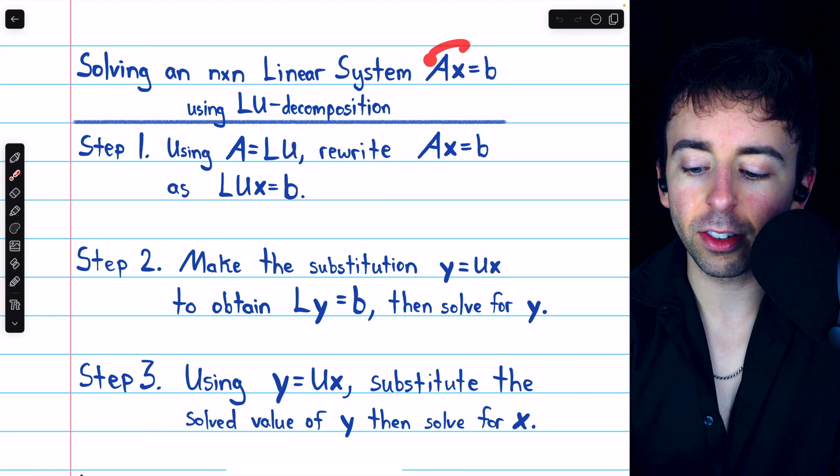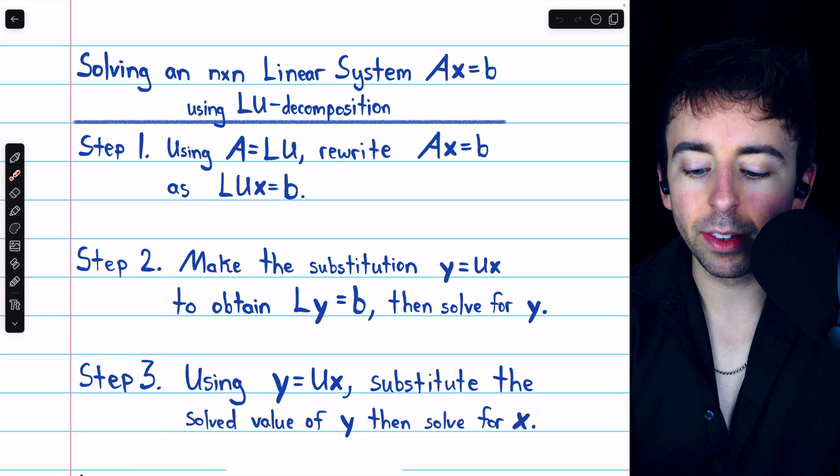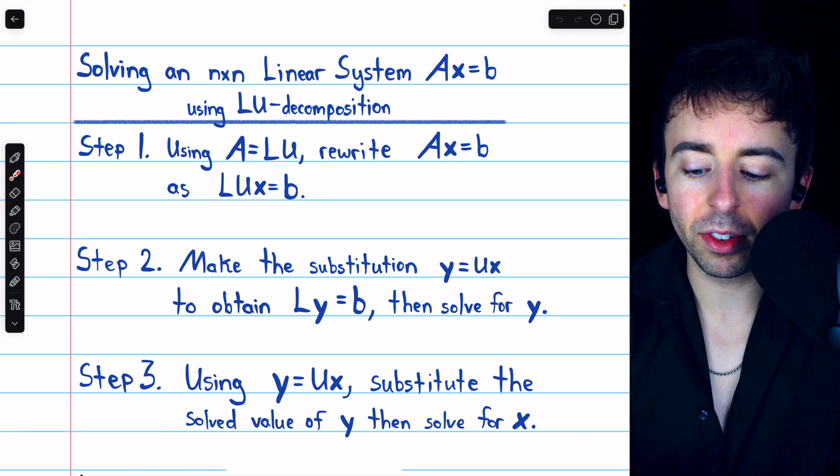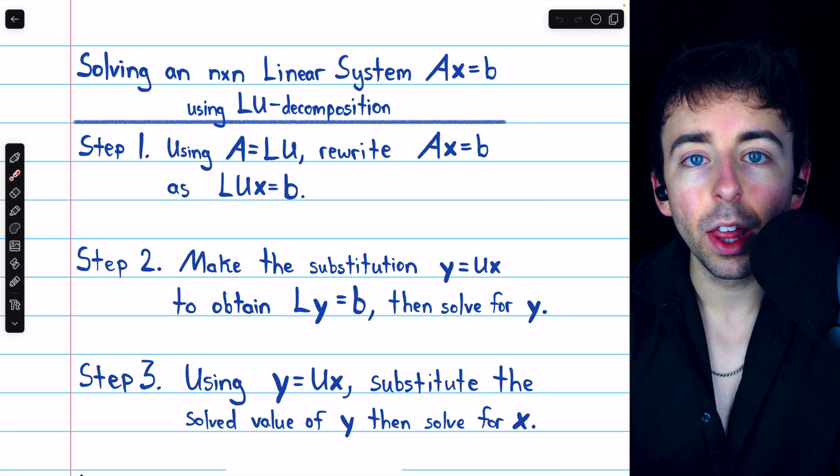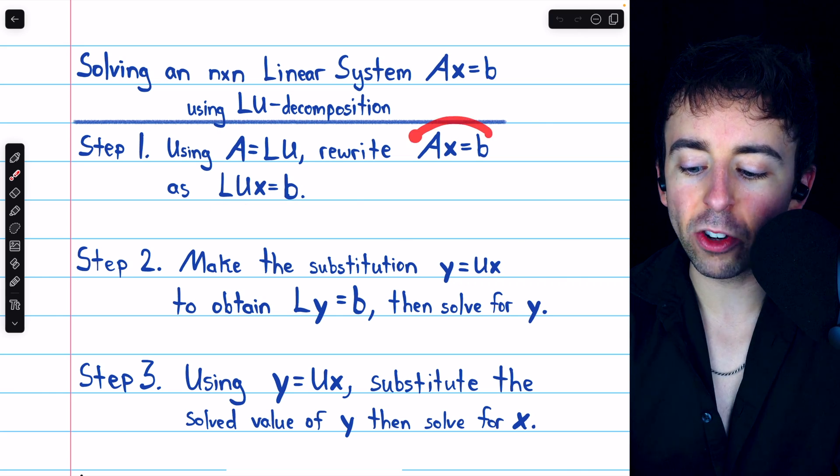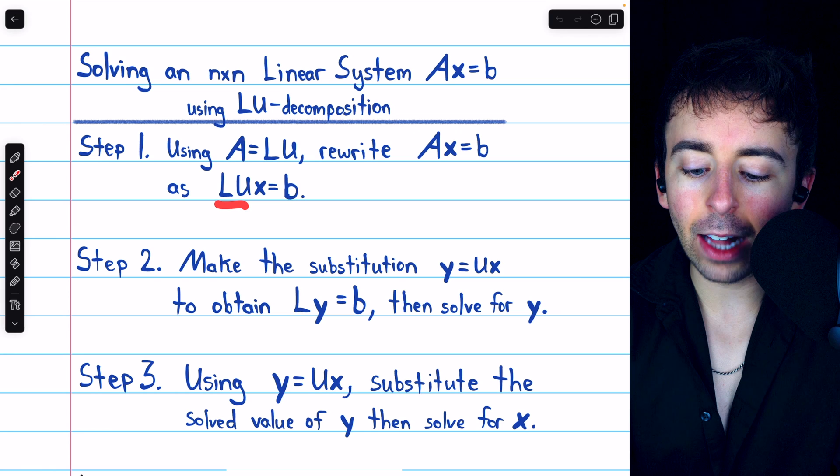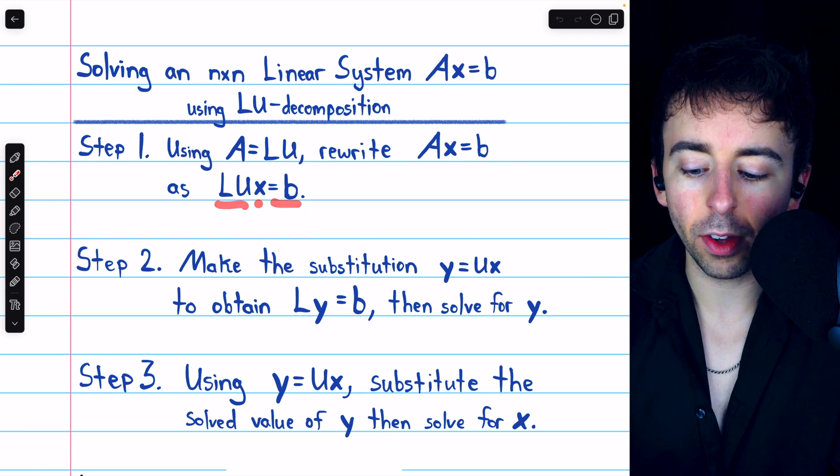To solve a linear system AX equals B, our first step is to use the LU decomposition to rewrite A as L times U. Thus, we rewrite the equation AX equals B as LUX equals B.